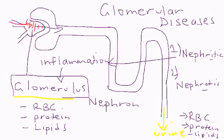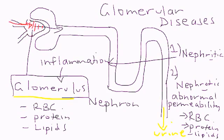The next type is nephrotic — with an O. Nephrotic is basically a situation where you have no real inflammation, but you have abnormal permeability of the glomerular membrane. What that essentially means is that molecules that are not supposed to pass through are passing through. There's no inflammation per se, but there's abnormal filtration going on at this level of the nephron. In this video, we're talking about RPGN, which is a type of nephritic disease — nephritic with an I.